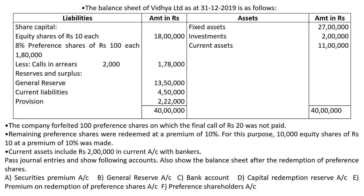The company forfeited 100 preference shares on which the final call of rupees 20 was not paid — so 100 shares, final call is 2,000 rupees. The remaining preference shares were redeemed at a premium of 10%. For this purpose, 10,000 equity shares of rupees 10 at a premium of 10% were issued. Current assets include a bank balance of 2 lakh rupees. Pass the journal entries and prepare the balance sheet after redemption of preference shares.